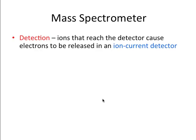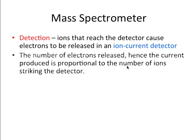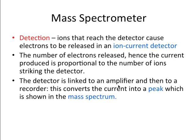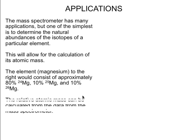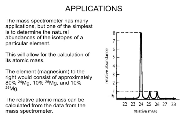And then the next final stage is the detection. Ions that reach the detector cause electrons to be released in an ion-current detector. So the amount of current that is produced is proportioned to the number of ions striking the detector. And we get a particular looking graph that converts that current into a peak, which is shown in the mass spectrum like this. This would be the results of a mass spectrometer run.